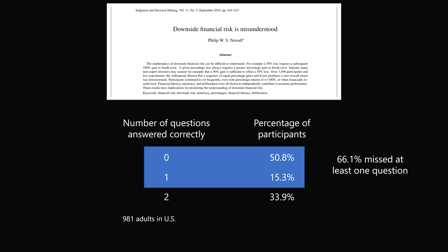Both of these questions appeared in a study called 'Downside Financial Risk is Misunderstood.' One question appeared at the beginning of the questionnaire and the other at the end, so they were not just side by side as I presented them. 981 adults in the United States participated in one of the experiments. 50.8% did not answer either question correctly. 15.3% answered one question correctly but got the other wrong — which is a little weird, because they're both logically equivalent. Only 33.9% got both questions correct, meaning 66.1% missed at least one question.